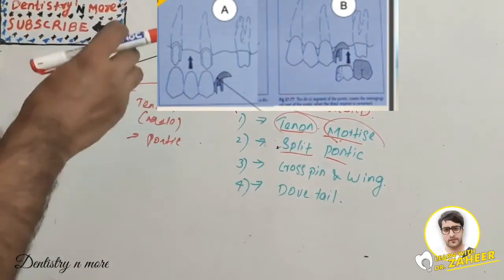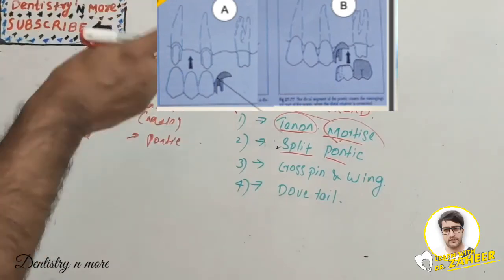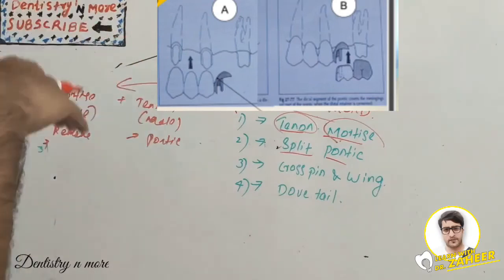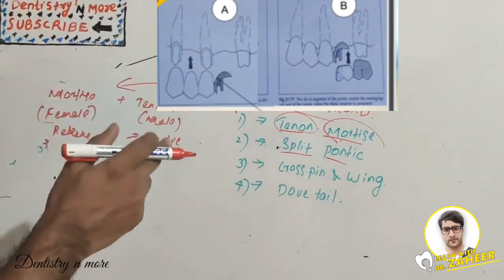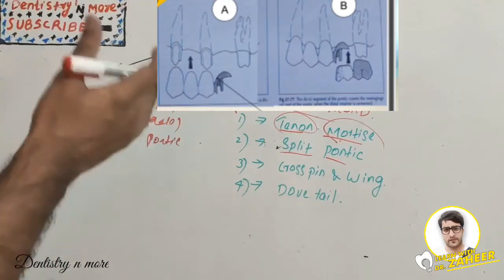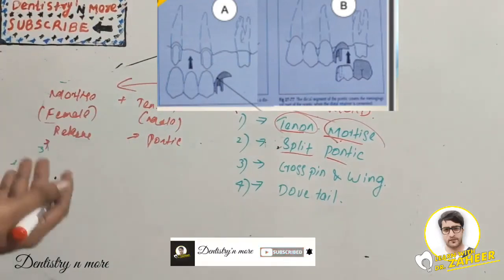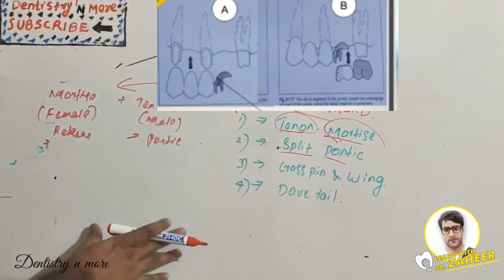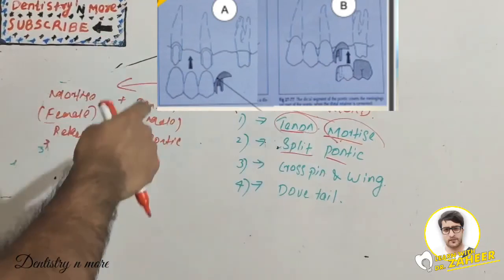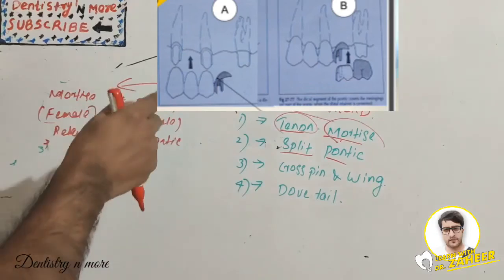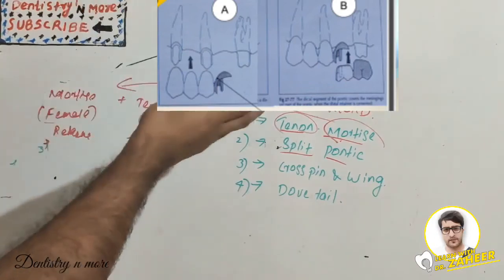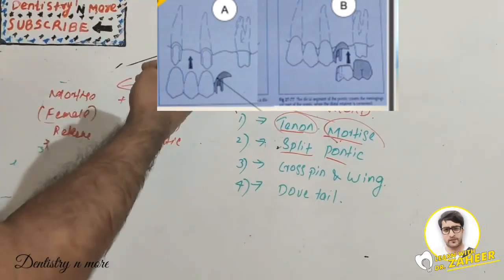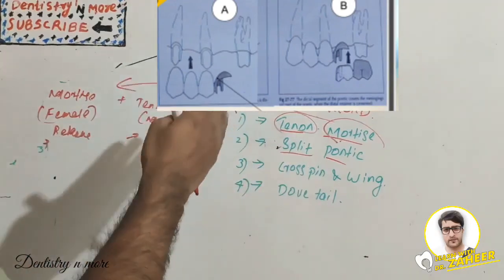The split pontic connector has an attachment placed entirely within the pontic. The mesial segment has a distal shoe — that is the gingival portion of the pontic — and the distal segment covers the mesial gingival part of the pontic. This is useful in tilted abutment cases where a conventional dovetail connector is not possible. The pontic is split into a mesial and distal segment, which are attached via the gingival portion.